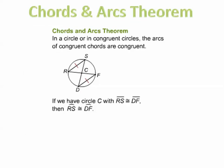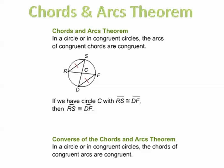The first theorem you need to be familiar with is the chords and arcs theorem. It says in a circle or in congruent circles, the arcs of congruent chords are congruent. So if circle C has chord RS congruent to chord DF, then arc RS is congruent to arc DF. There's also the converse, which says in a circle or in congruent circles, the chords of congruent arcs are congruent. So if you know the arcs are congruent, you automatically know their chords are congruent.